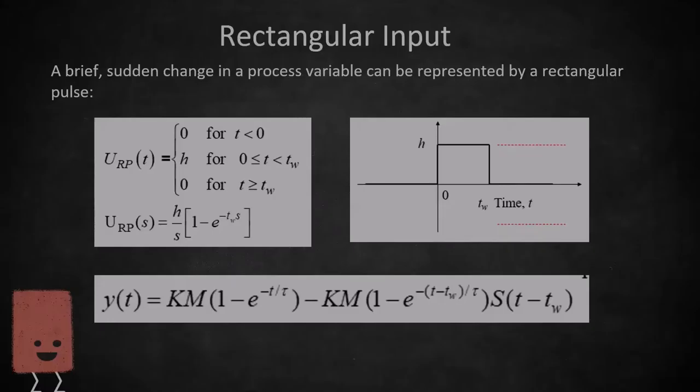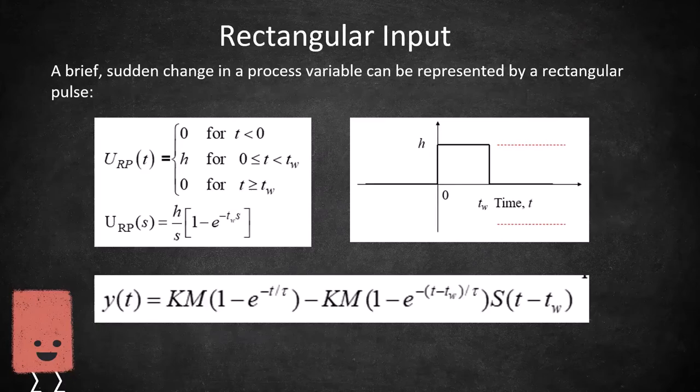Next is a rectangular input, which is a brief sudden change in a process variable that can be represented by a rectangular pulse. This is very similar to a step input, as it jumps right up to a certain value at time equals zero,